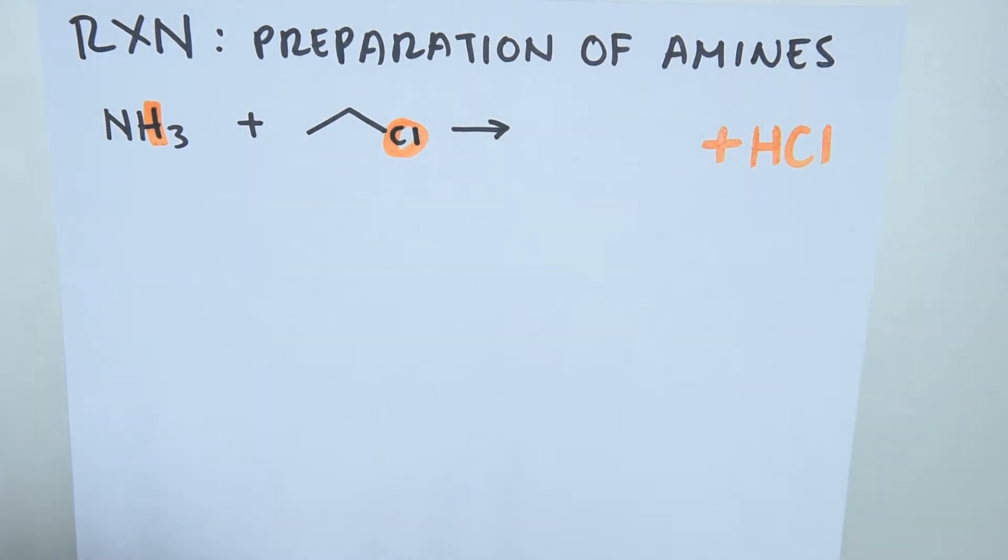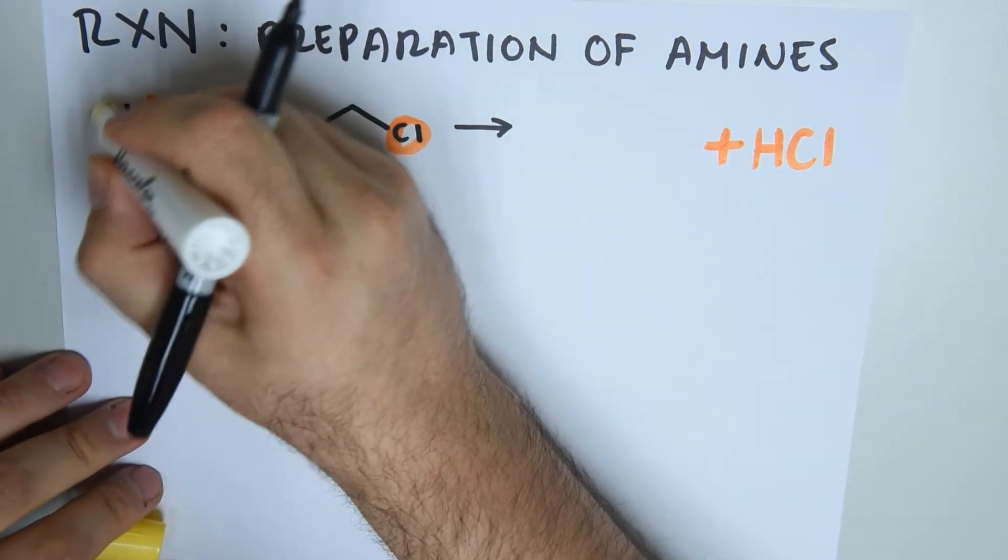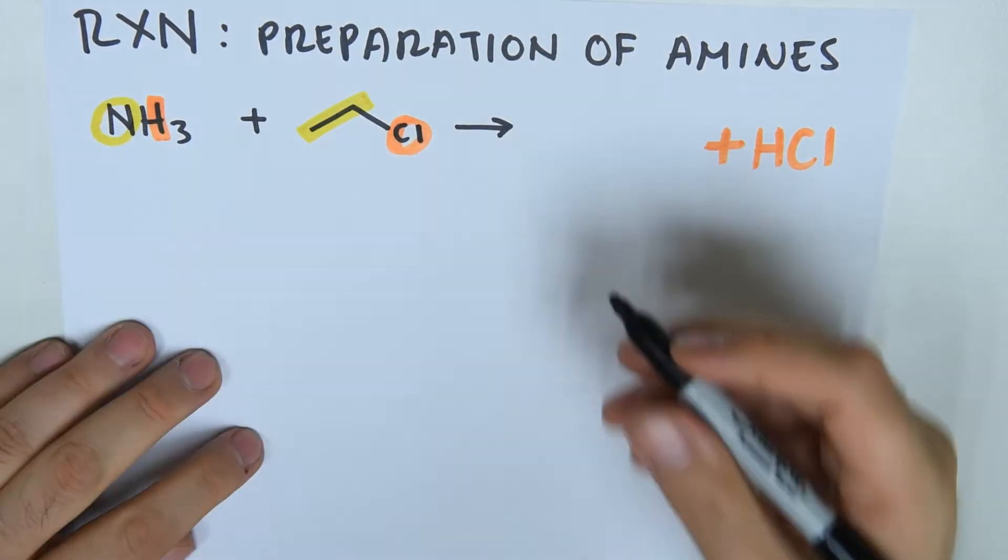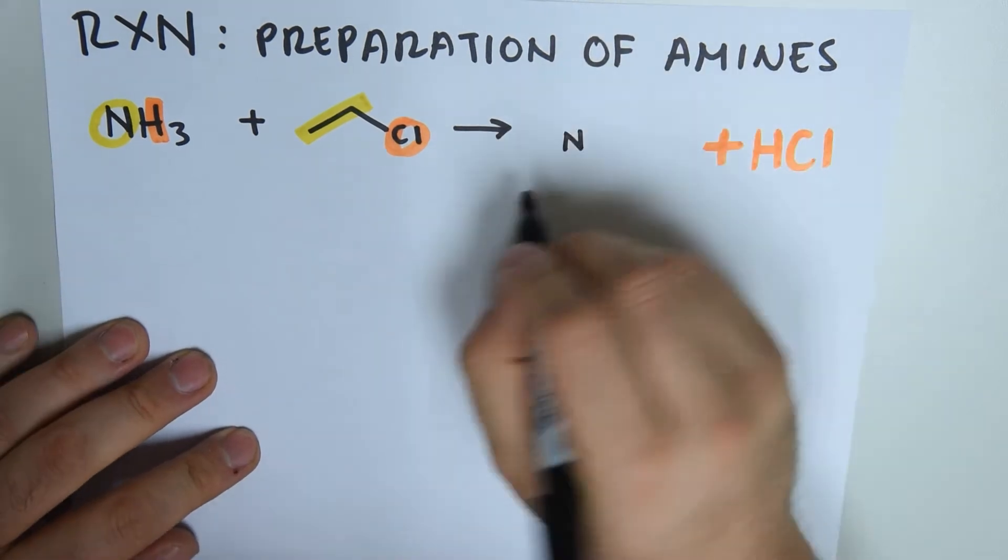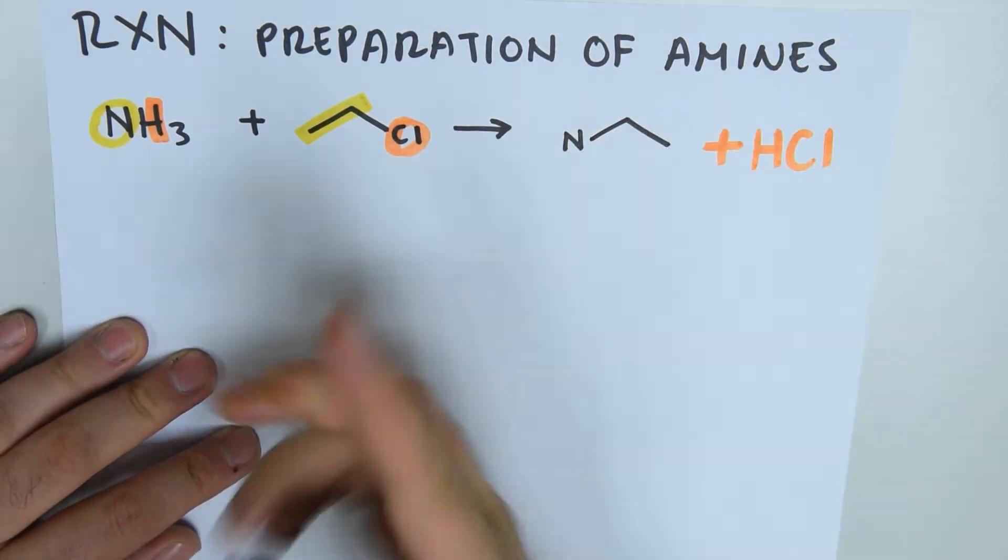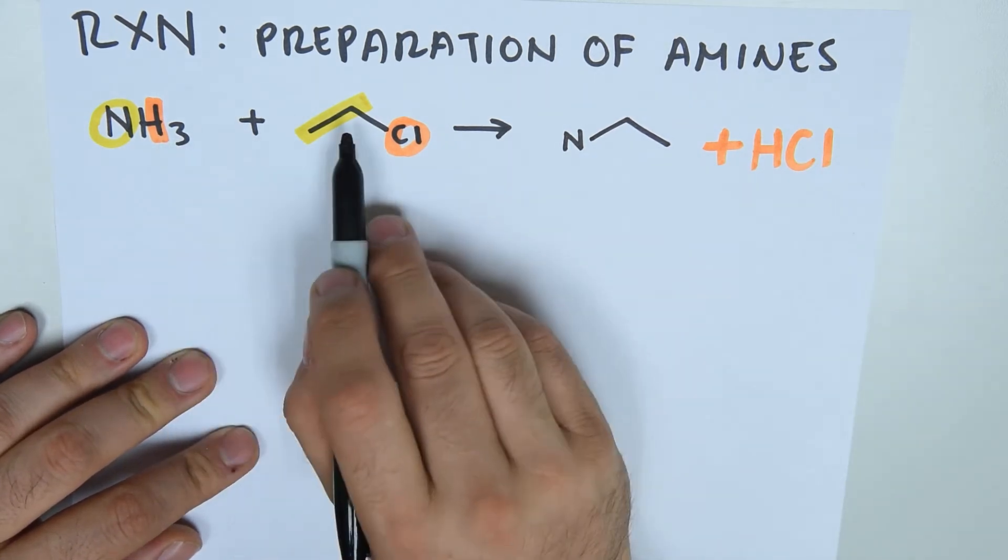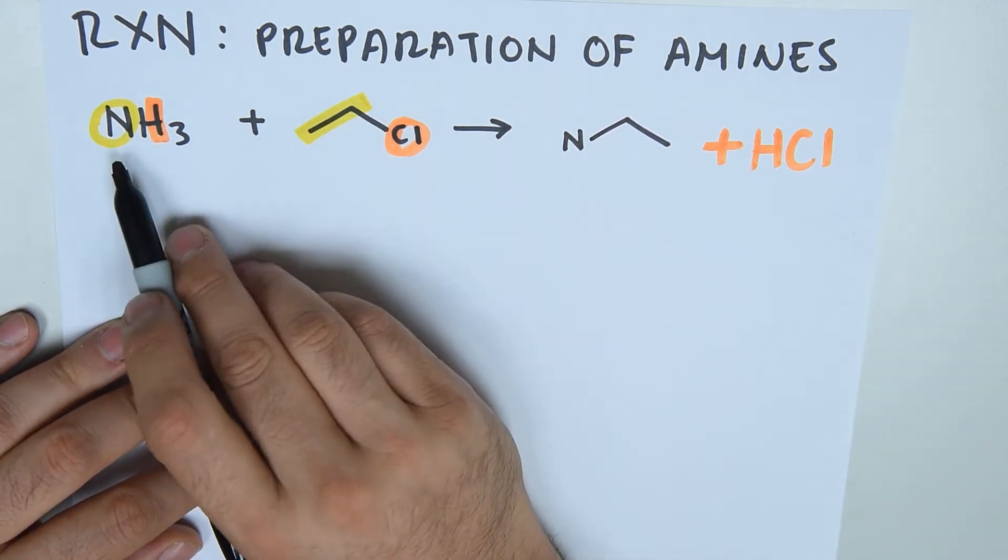So what is left over from this molecule? We still have the nitrogen and we still have the carbon chain. So we take the nitrogen and we attach the carbon chain to it. Because there was a substitution, these two inverted partners. Chlorine went with the hydrogen and the carbon chain went with the nitrogen.